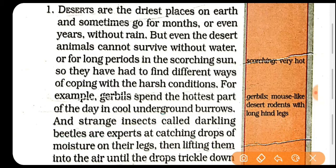Deserts jo hain woh kya hain? Sabse driest place hain earth ke upar — prithvi ke upar jo sabse sukha ilaqa hota hai, us ko desert bolte hain. Kai baar wahan pe mahino tak aur even kayi salon tak bhi baarish nahi hoti hai. Means deserts are the driest places on earth and sometimes go for months or even years without rain.